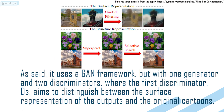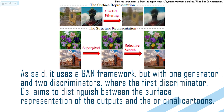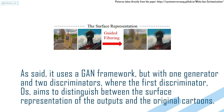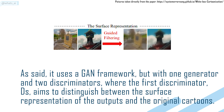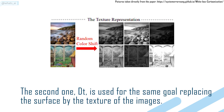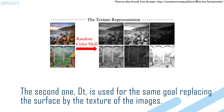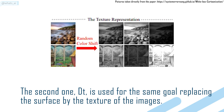It uses a GAN framework with one generator and two discriminators. The first discriminator, DS, aims to distinguish between the surface representation of the outputs and the original cartoons. The second one, DT, is used for the same goal, replacing the surface by the texture of the images.